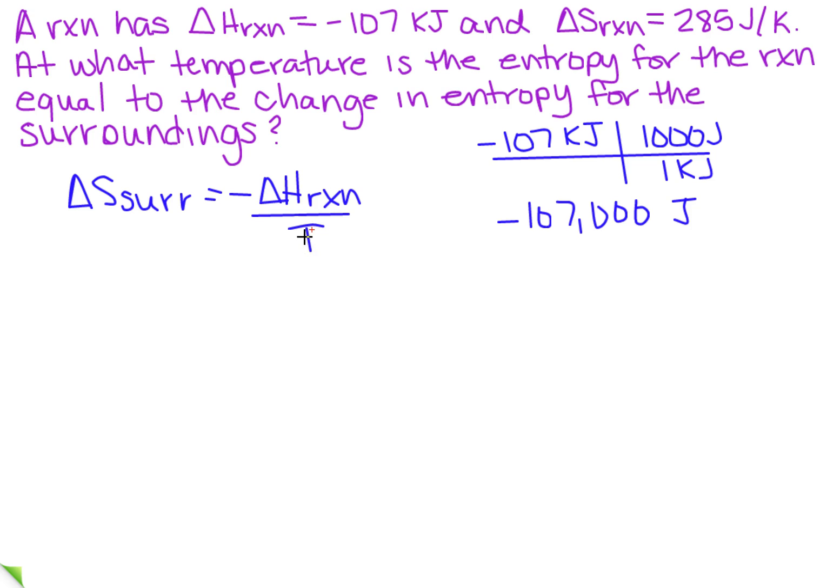Well we need to solve for what? Temperature. So I'm going to go ahead and cross multiply and then solve for T. So I get that T equals minus delta H of the reaction divided by delta S of the reaction.